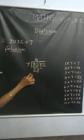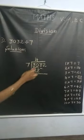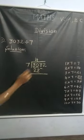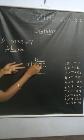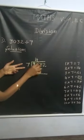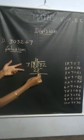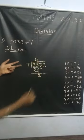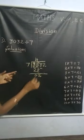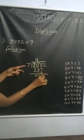Then subtract. 0 minus 8 — we cannot subtract 8 from 0, so we borrow. Then 3 becomes 2, and 0 becomes 10. 10 minus 8 is 2. 2 minus 2 is 0. Then bring down 3.